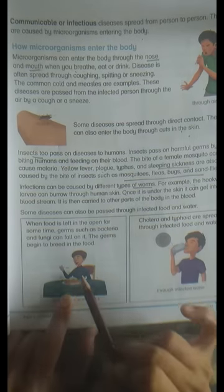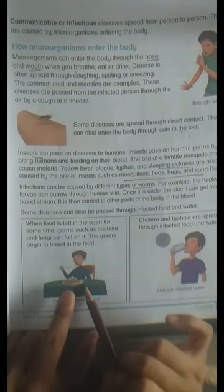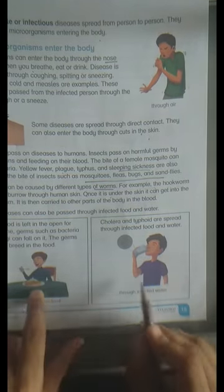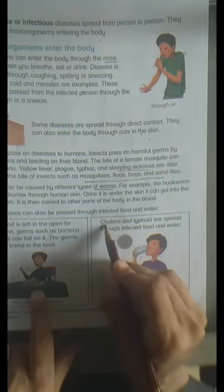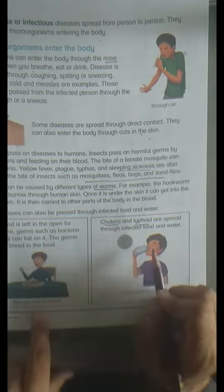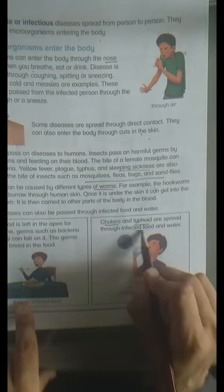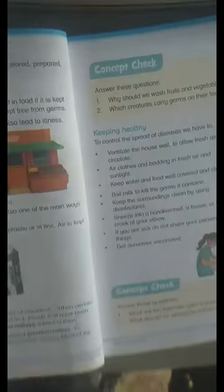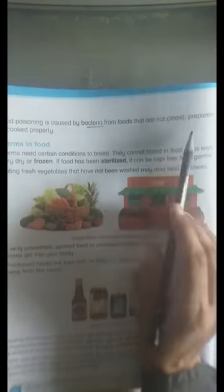Cholera and typhoid are spread through infected food and water. We should drink clean water and eat uncontaminated food. Food poisoning is also a disease caused by bacteria that grow on food when it is not stored properly.